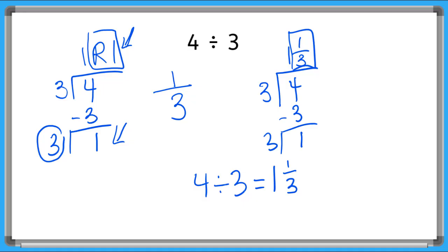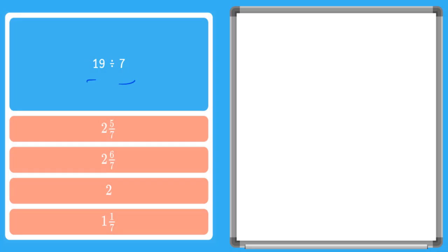All right, let's try some harder problems together. All right, so 19 divided by seven so let's write it out. So seven goes into 19. How many times?